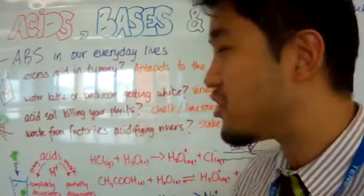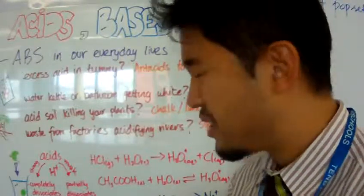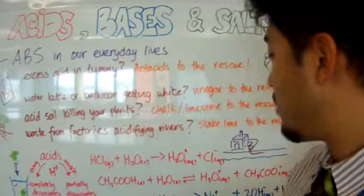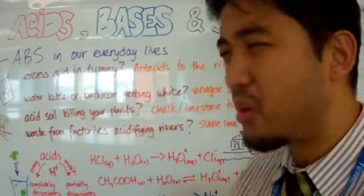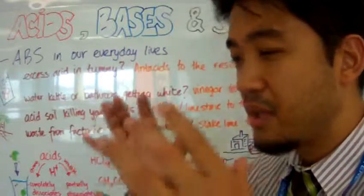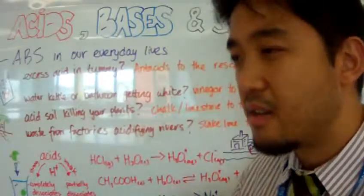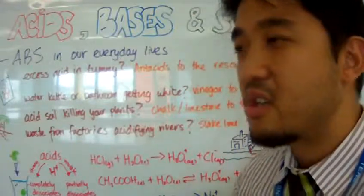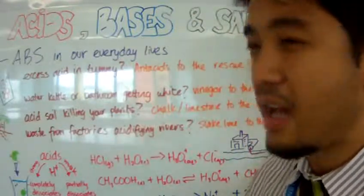Waste from factories that has been discharged and acidifying the rivers and streams and lakes. What do we need to do? Well, before it gets discharged to the lakes and rivers, you have a base in there, in the discharge, before the discharge area, and basically you're neutralizing the acid base.